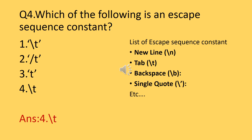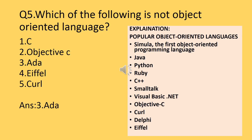Question number five: which of the following is not an object-oriented programming language? The answer is Ada. Ada is an object-based programming language, not a fully object-oriented one. Object-oriented languages include Simula, Java, Python, Ruby, C++, Smalltalk, Visual Basic, .NET, Objective-C, Curl, and Delphi. So the answer is Ada.